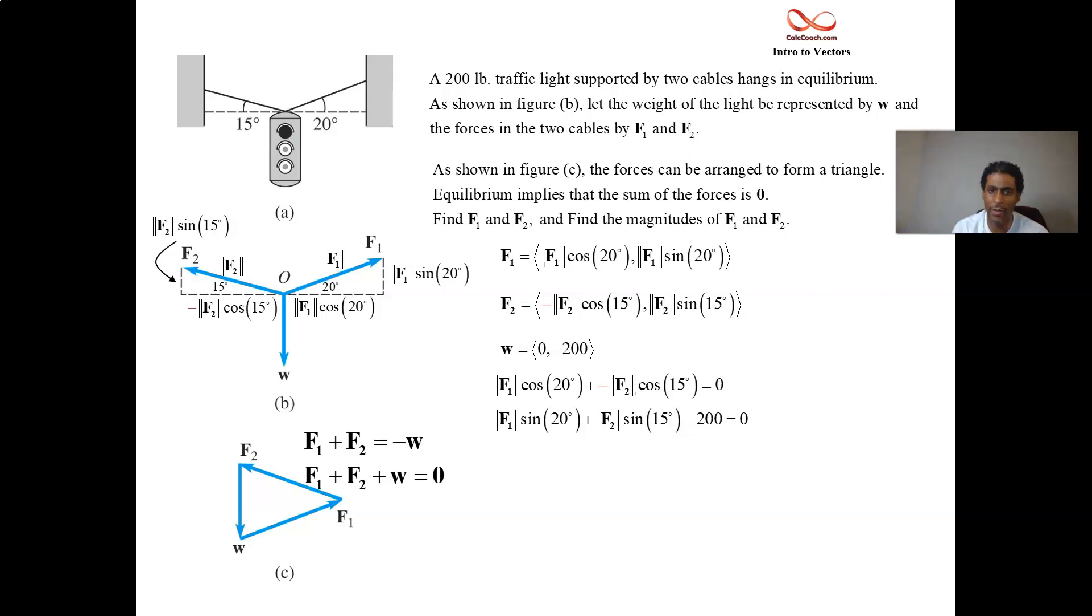Two equations, two unknowns. The double bar mag F1, double bar mag F2, those are your variables. That's what you're looking for. This isn't some simple elimination method. We're going to have to do a substitution method. Take the first one and solve for mag F1 by adding the mag F2 cosine 15 over and then dividing by the cosine 20.